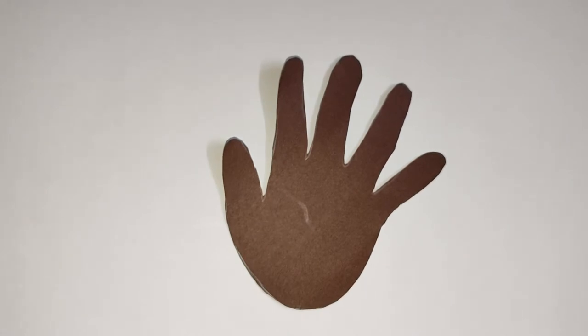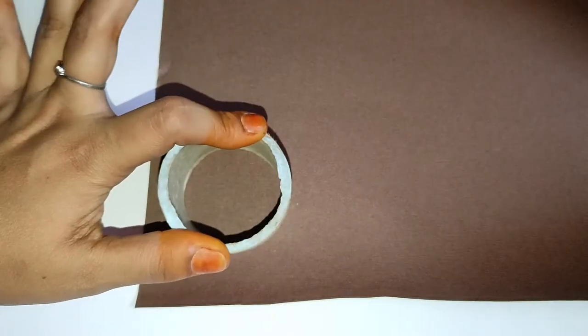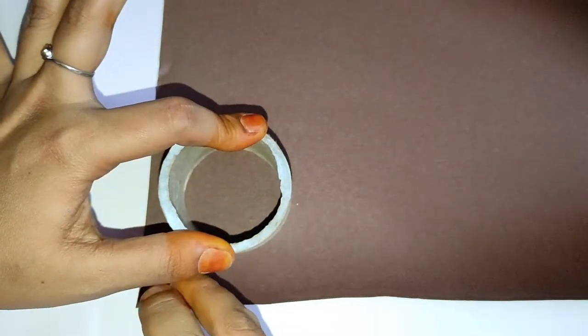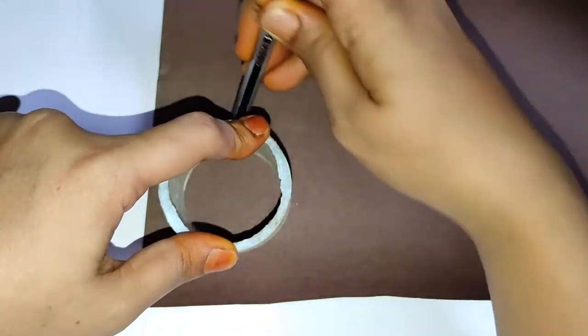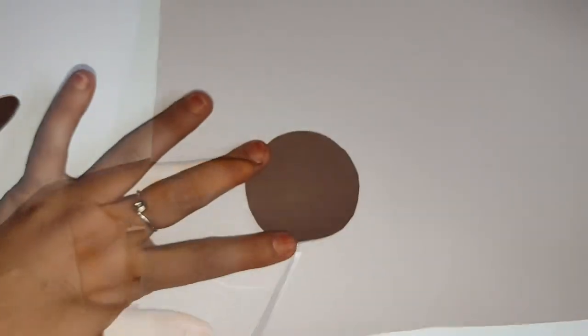So our hand print art is ready. Next I am drawing a circle using a round object and cut it. So this will be our head of the monkey.